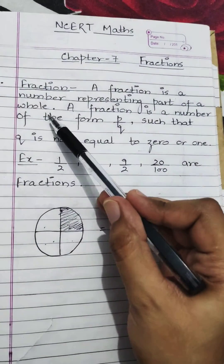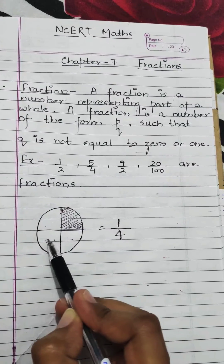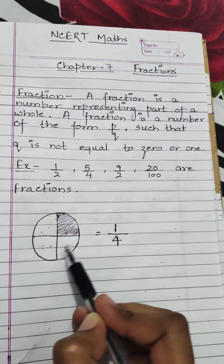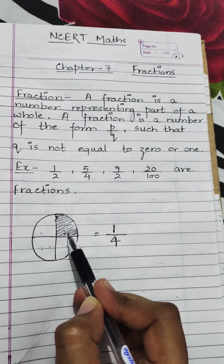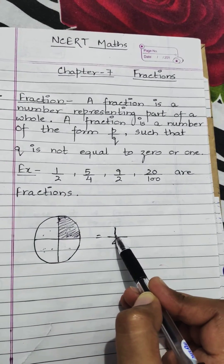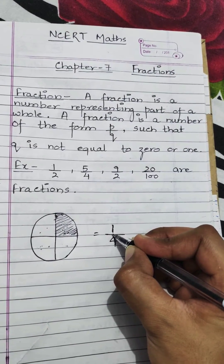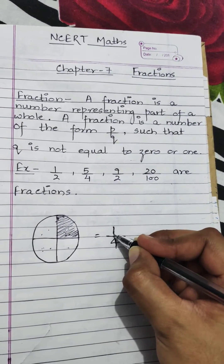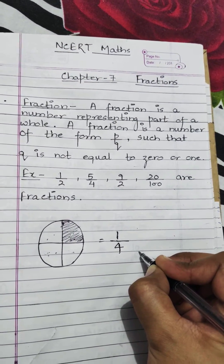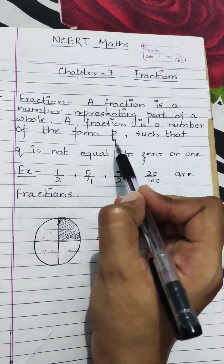This is the whole portion. I have divided this portion into four parts — total parts are four, that is why I have written four in the denominator. Out of four parts, only one is shaded, so one will come in the numerator. The number written above is your numerator; the number written at the bottom is your denominator.